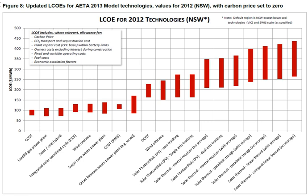LCOE data from the California Energy Commission report titled 'Estimated Cost of New Renewable and Fossil Generation in California' was calculated for all three classes of developers: Merchant, Investor-Owned Utility, and Publicly-Owned Utility.